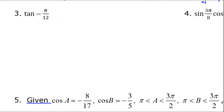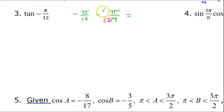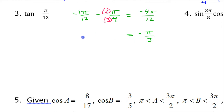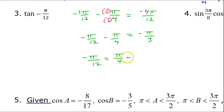Let's do the same thing for number 3. First we need to figure out how to split up negative π over 12. Again, let's try subtracting π over 4 and see what that does. To make like denominators I multiply by 3, giving negative π over 12 minus 3π over 12, which is negative 4π over 12. This reduces to negative π over 3. So negative π over 12 minus π over 4 equals negative π over 3, and adding π over 4 to both sides gives negative π over 12 equals π over 4 minus π over 3.